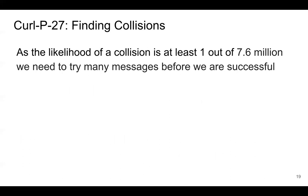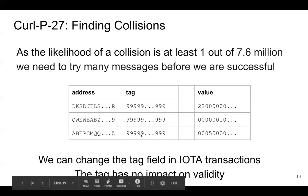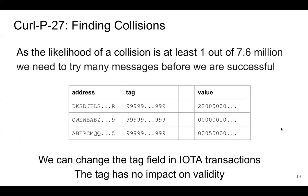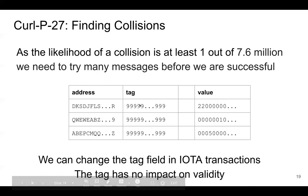If we choose our message carefully and fix some of the trits, curlP27 has about 23 bits of collision resistance. One feature that makes our attack much easier is that IOTA transactions have a data structure called a tag. The tag has no impact on validity and is not used anywhere else — generally it's just used to put in messages like 'I heart IOTA.' So we can randomly change this field, and once we choose a payment to perform the attack on, we can exploit this tag to try and find lots of collisions.